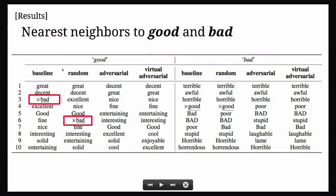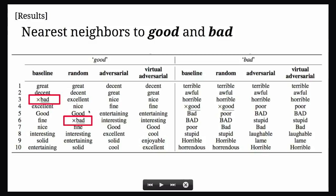Here is a qualitative look at nearest neighbor labels before and after our regularization method. Before regularization, 'good' has 'bad' as a very close nearest neighbor, which is something you don't want in a supervised sentiment analysis system. After applying our objective, 'bad' goes away as a nearest neighbor of 'good'.